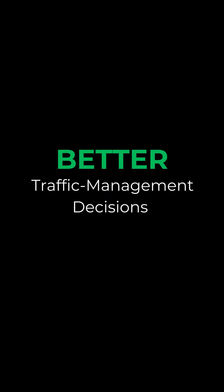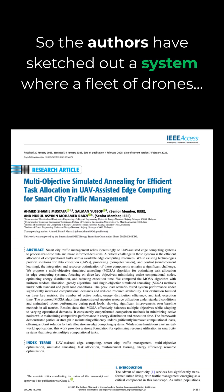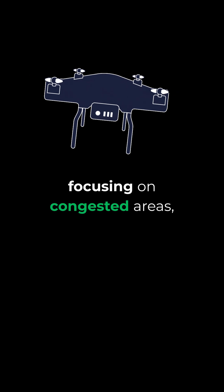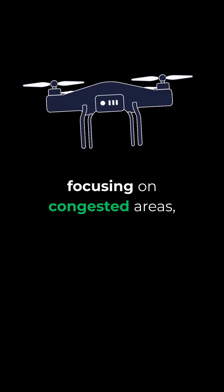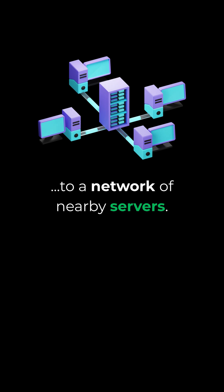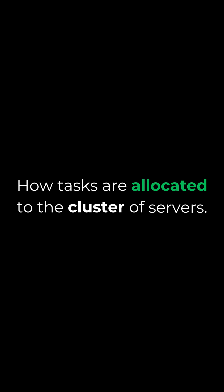How do you do that? Well, you can't make better traffic management decisions unless you have better data. So the authors have sketched out a system where a fleet of drones, aka UAVs, hover over the city, focusing on congested areas, and they transmit this media in real time to a network of nearby servers. Today, we're just going to be looking at how tasks are allocated to the cluster of servers.